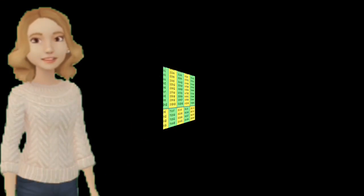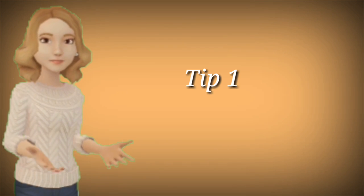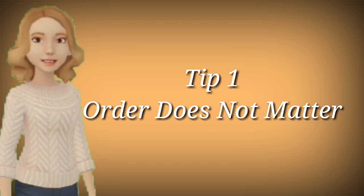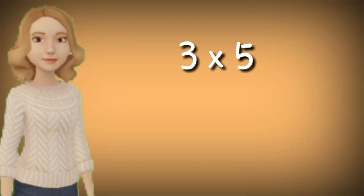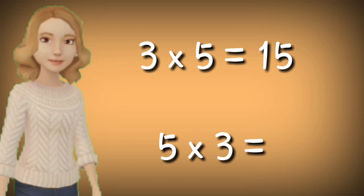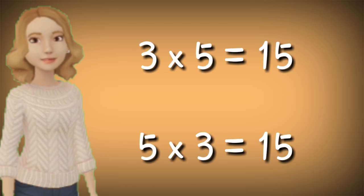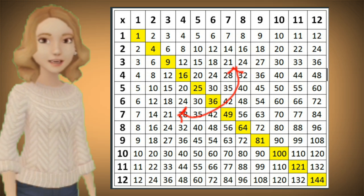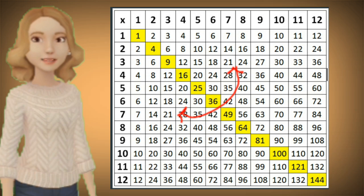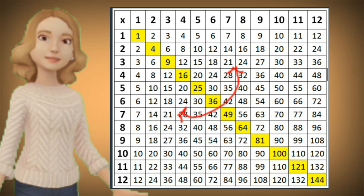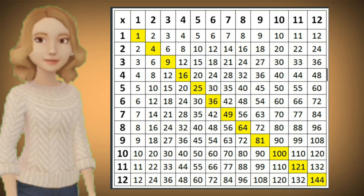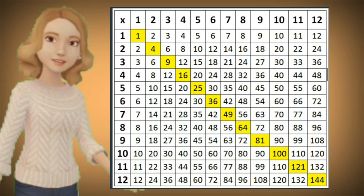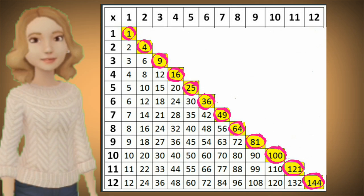Tip number one: order does not matter. This means that if you multiply 3 times 5 equals 15, as well as 5 times 3 equals 15. This will make the times table to be divided into two equal halves, like a mirror, making it easier to memorize because we only need to memorize half of it.